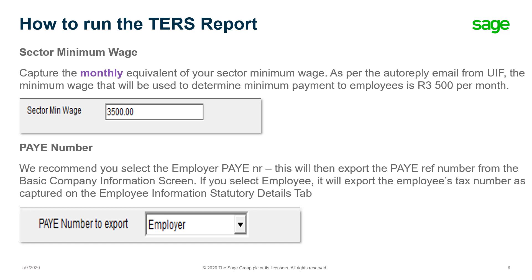The sector minimum wage that must be captured is the monthly equivalent of your sector minimum wage. As per the auto-reply email from UIF, the minimum wage that will be used to determine the minimum payment to employees is R3,500. So whether you complete your sector minimum wage or R3,500, the UIF will only be working with R3,500.